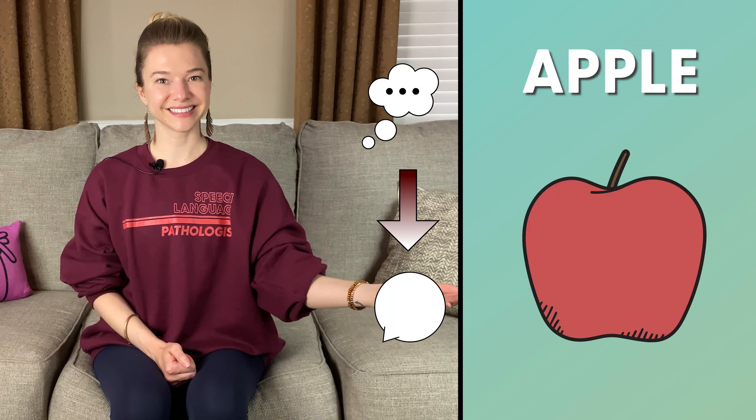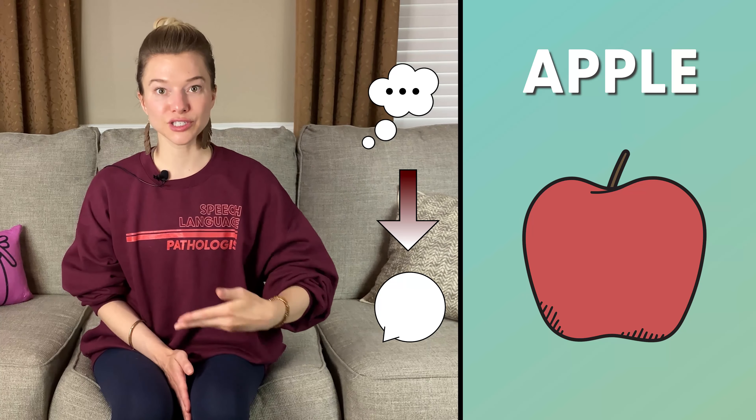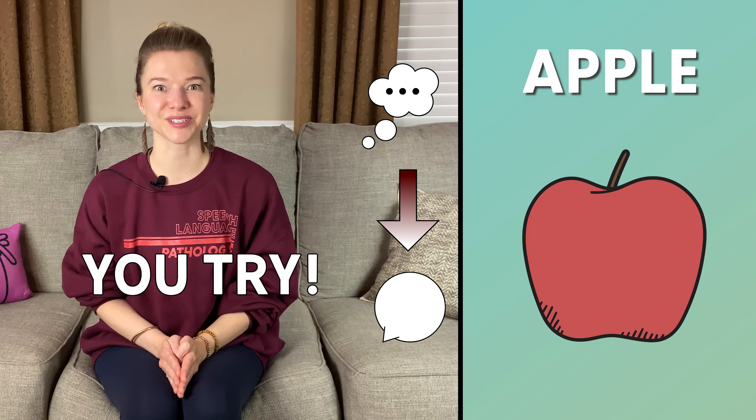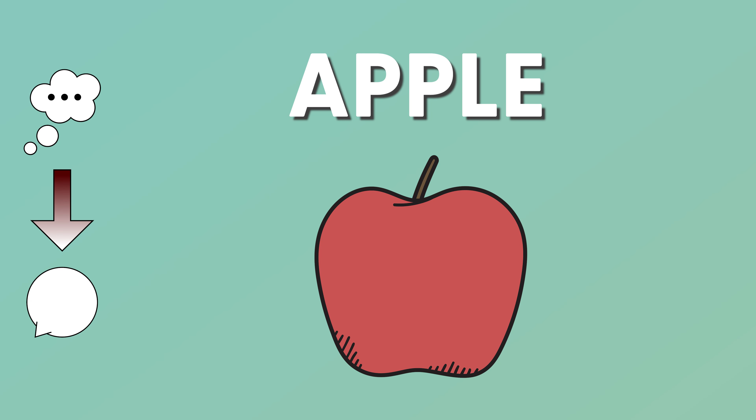Great job, you are doing awesome! Let's do one more to practice the pull-out strategy. We're going to say the word 'apple' and we're going to have a block on the A sound, so all the tension is going to be in our throat. We're going to think about it, catch ourselves, reduce that tension in our throat, and continue with the rest of the word. I'll do it first and then you do it after me. Did you see how I thought about it, reduced my tension, and kept going? That's a pull-out. Now it's your turn to try.